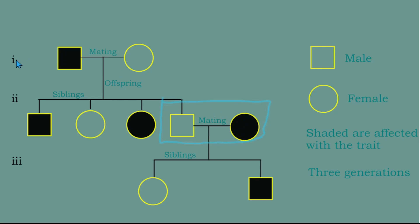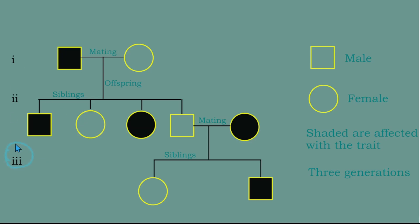The Roman numerals on the side represent generations. We have the first generation, second generation, and third generation. This is how we interpret a pedigree.